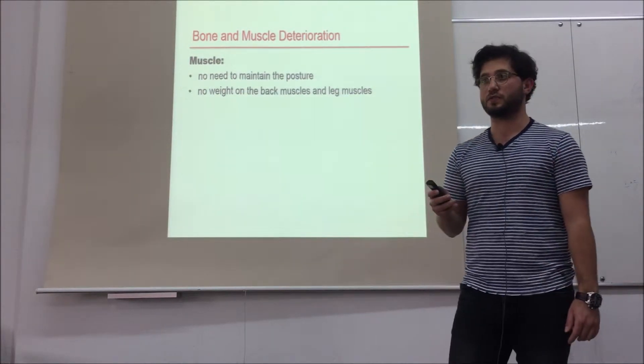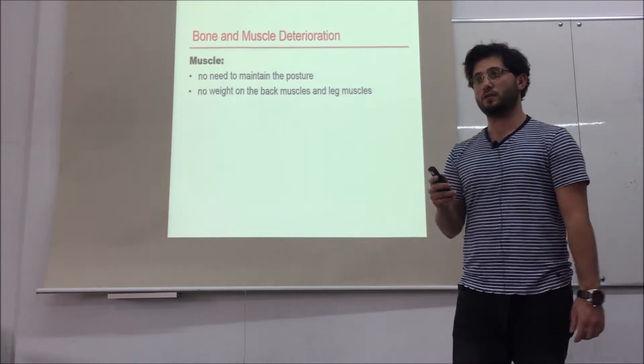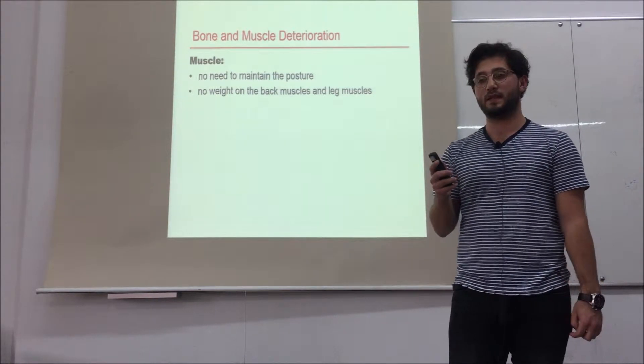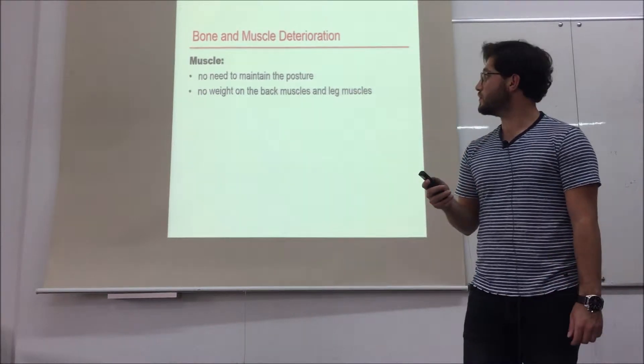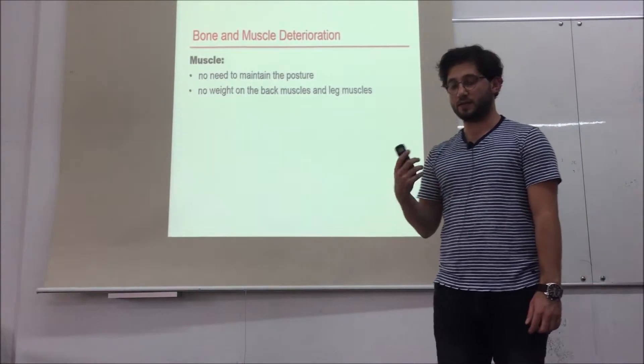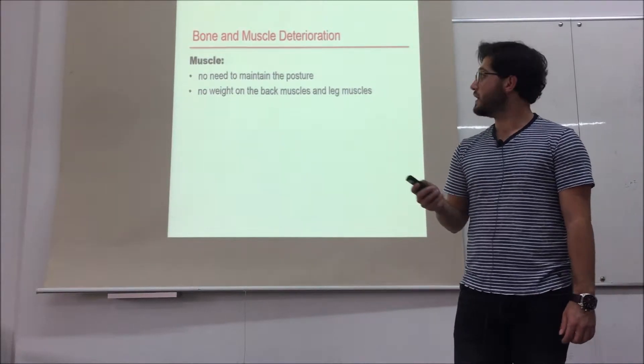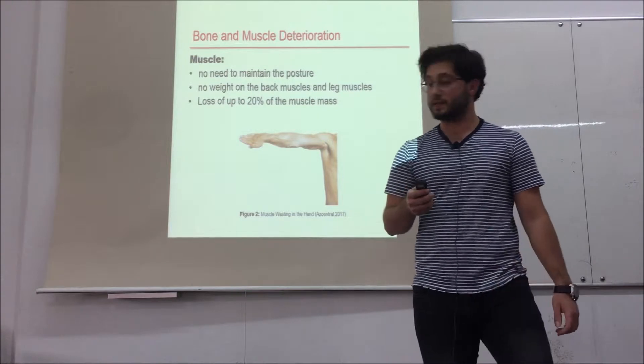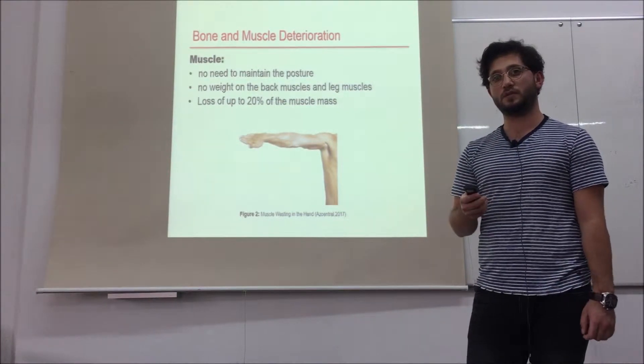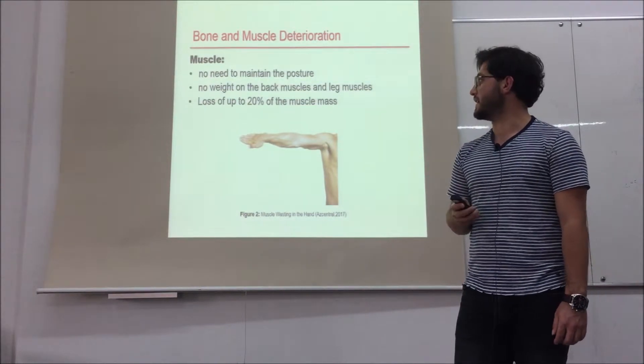In space, astronauts put almost no weight on the back muscles and the leg muscles used for standing up. So those muscles then start to weaken and eventually get smaller. Even these astronauts can lose up to 20% of their muscle mass in just 5 to 11 days.